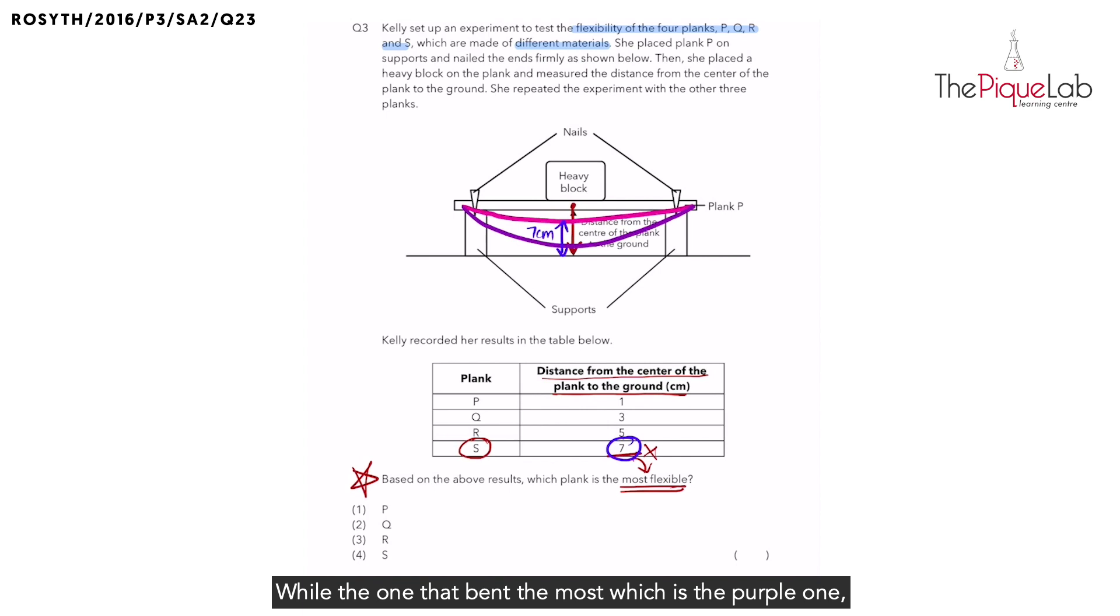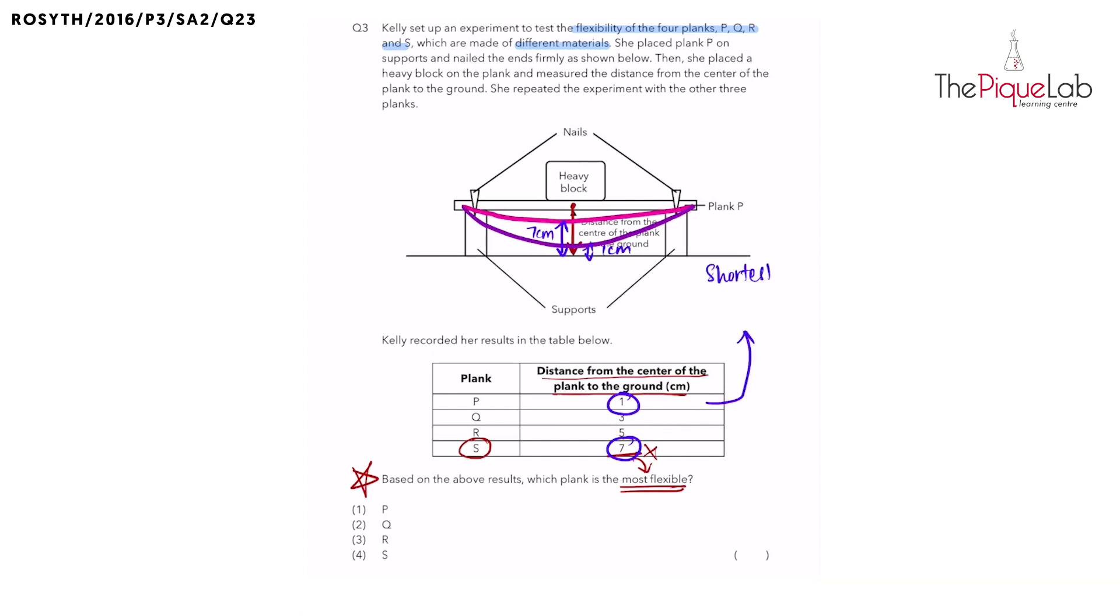Well, the one that bent the most, which is the purple one, has the shortest distance, which is 1 cm. So since plank P is the one with the shortest distance between the plank and the ground...